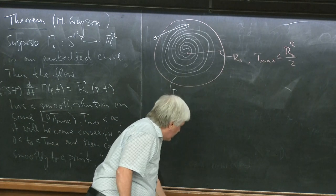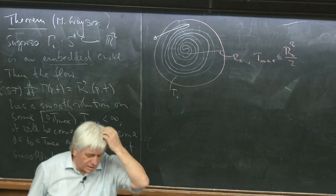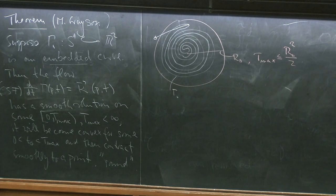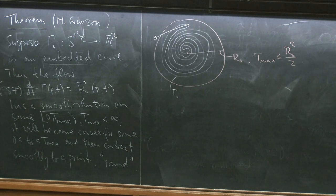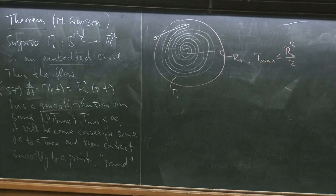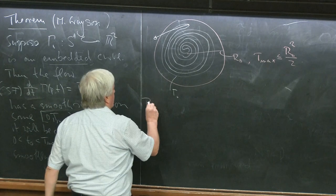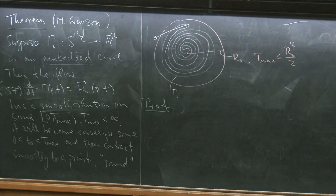The way Grayson proved this was a very beautiful, intricate analysis of the number of turning points — where kappa changes its sign. He showed this is monotonically decreasing, kept track of the pieces in between, and eventually showed that no singularities develop before this happens.